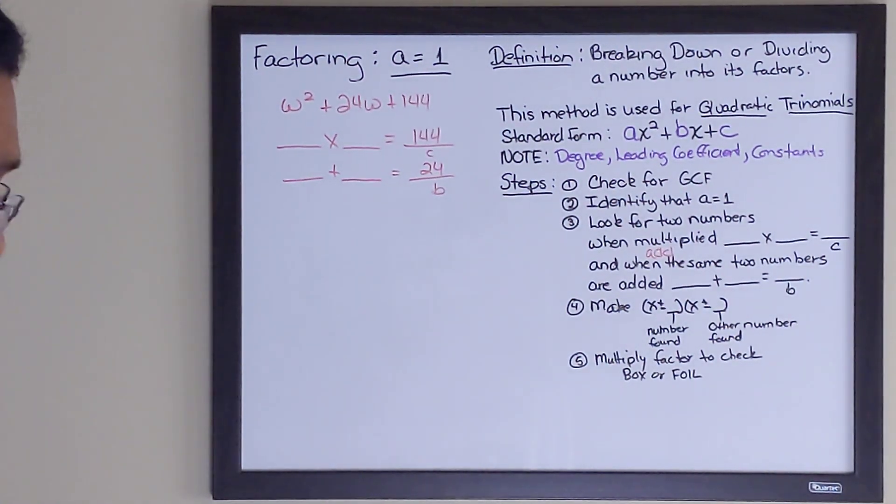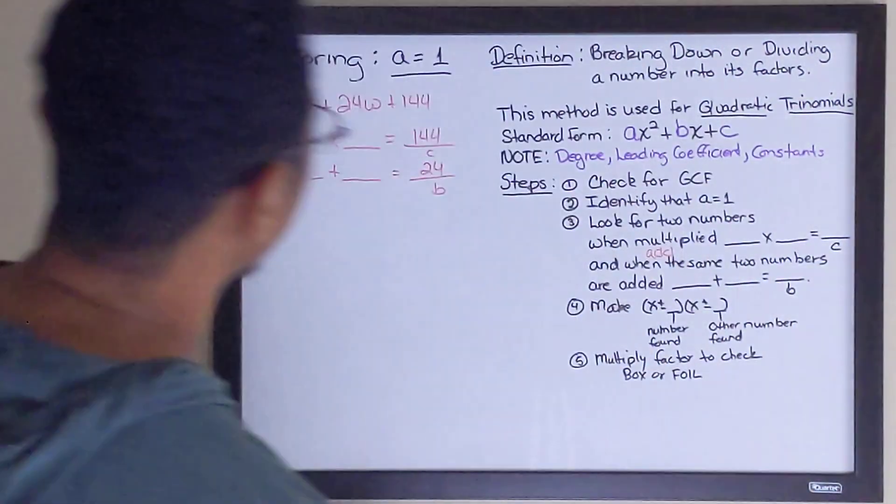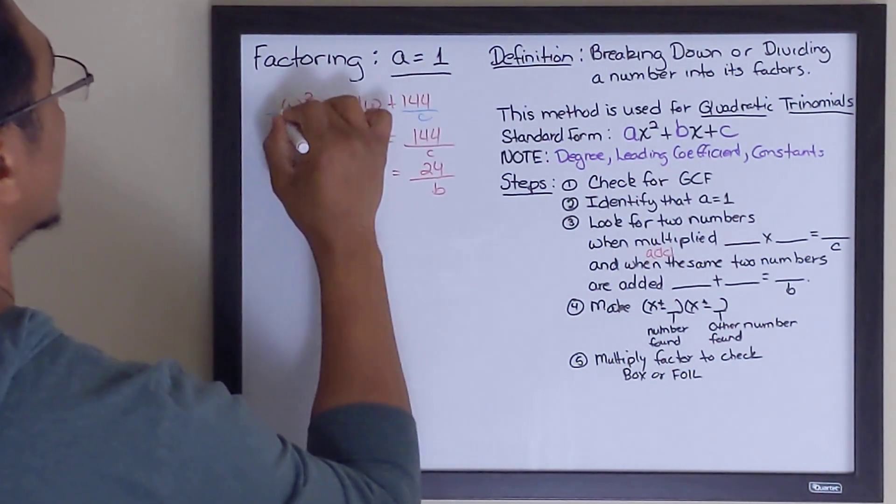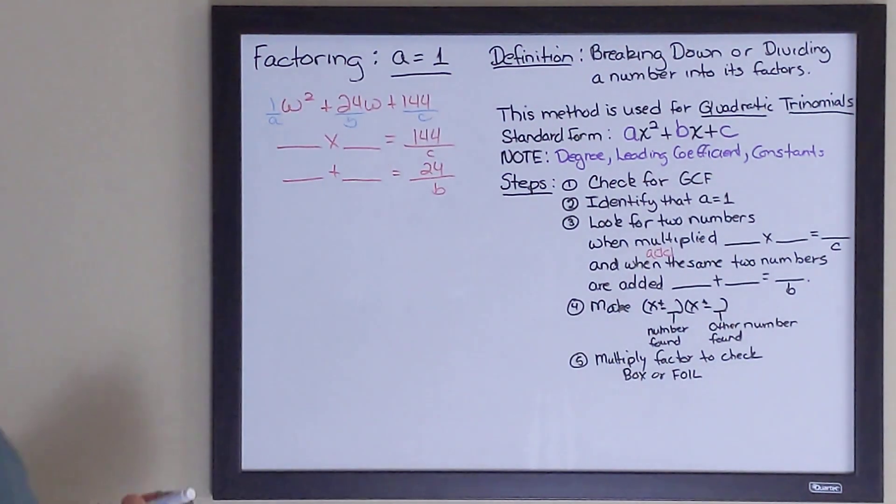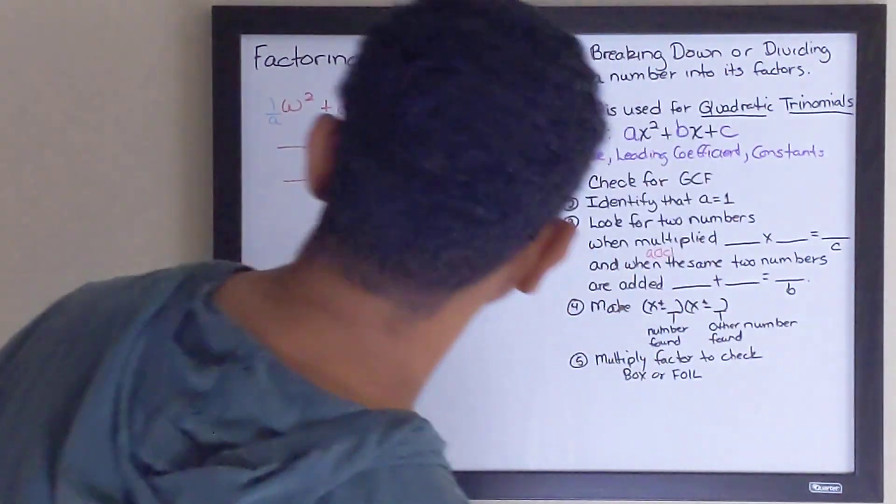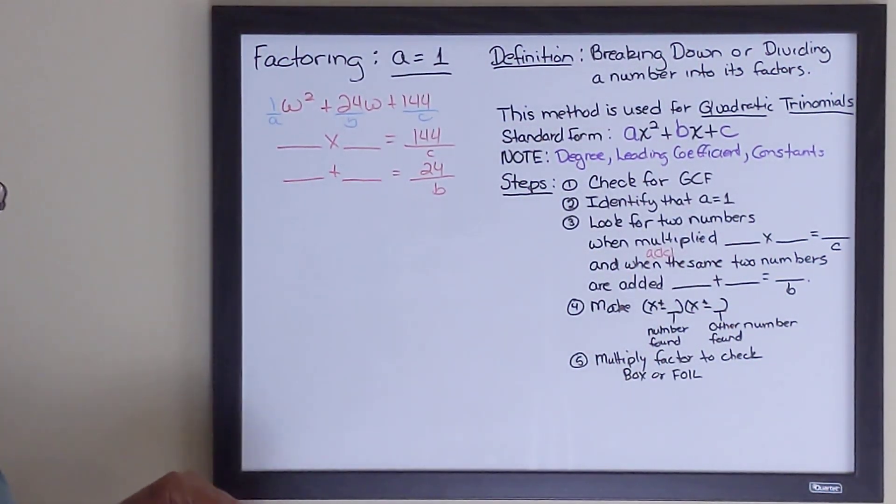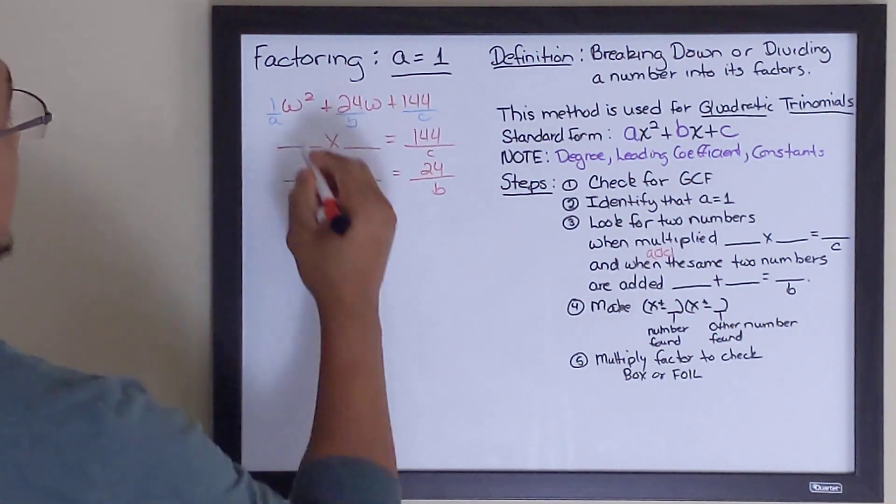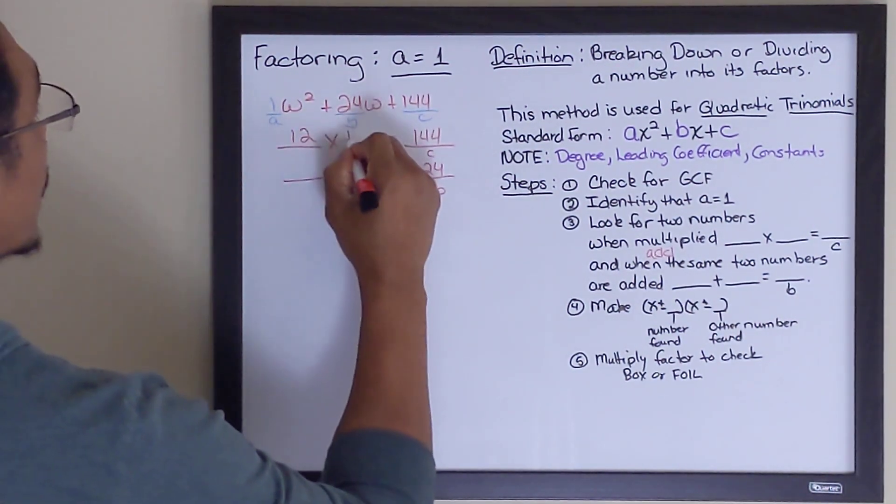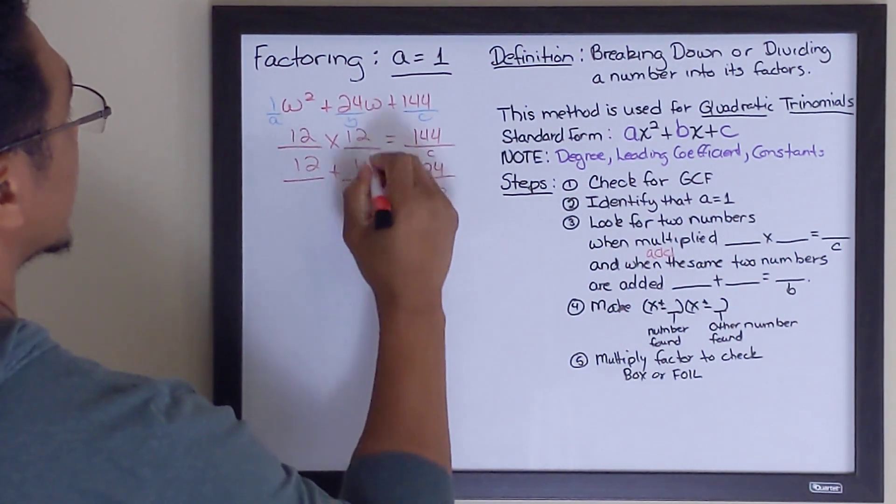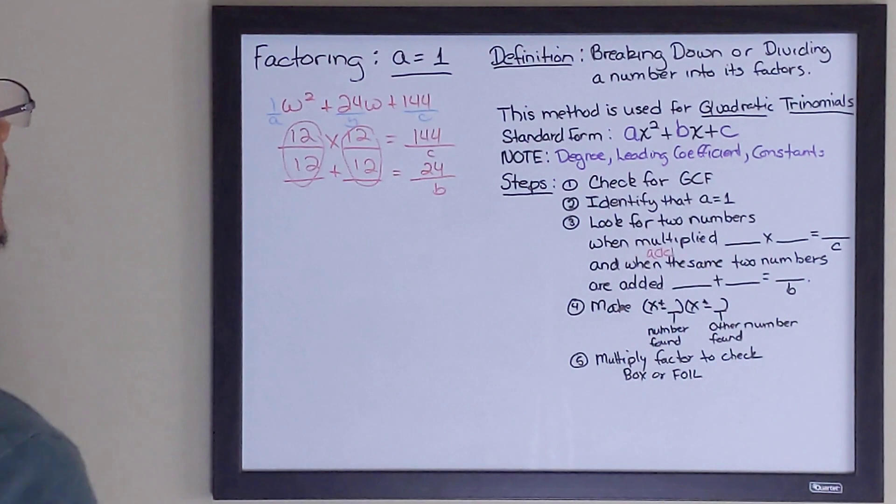So in case you guys can't see that, this is c, this is b, and this is a. Those are my constants in this expression. So let's move on. What numbers can multiply to 144 and add to 24? You may have to do some trial and error, right? But the numbers are 12 and 12.